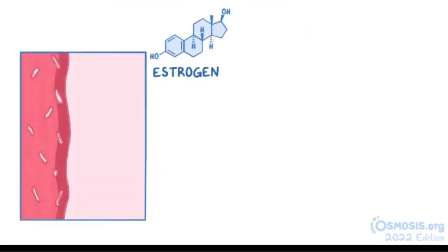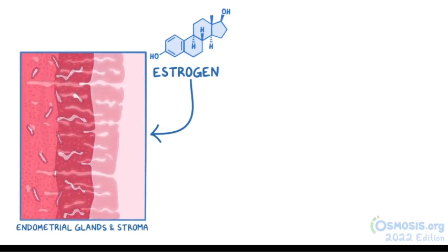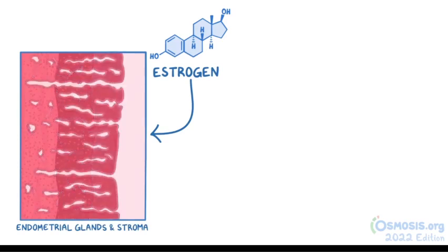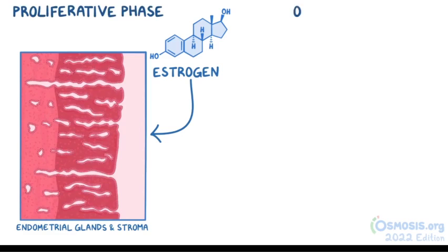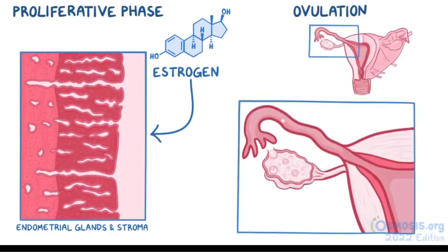Estrogen stimulates the growth of endometrial glands and stroma. This effect predominates during the first phase of the menstrual cycle, called the proliferative phase, when the lining of the endometrium grows. At the end of this phase, ovulation occurs, where one ovarian follicle expels the oocyte into the fallopian tube and it travels to the uterus.